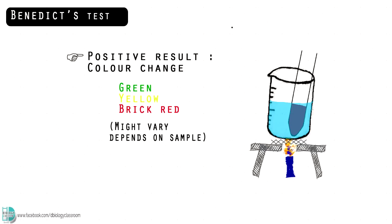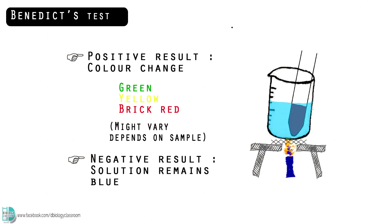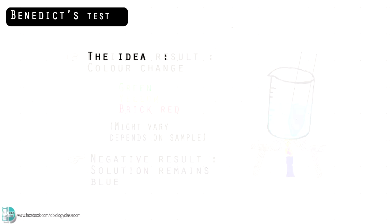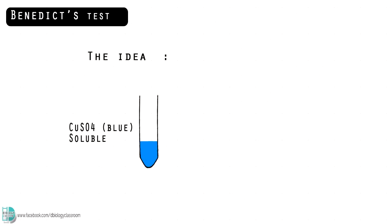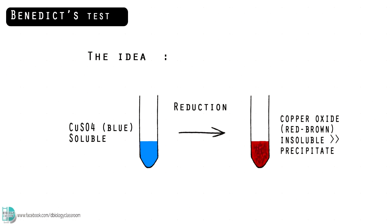This depends on the amount of reducing sugar in the sample. If there's no reducing sugar in the sample, the solution will remain blue. Benedict's solution contains copper sulfate. Reducing sugars reduce the soluble blue copper sulfate into insoluble red-brown copper oxide, which is seen as a precipitate.